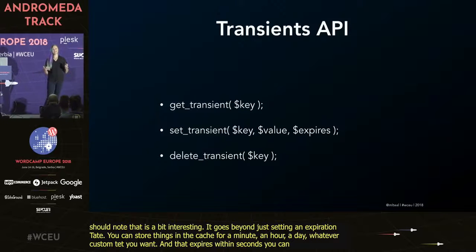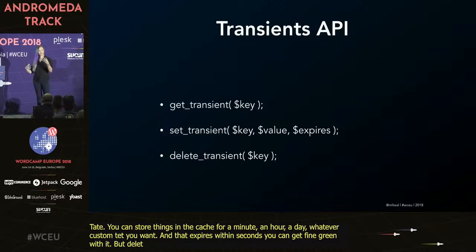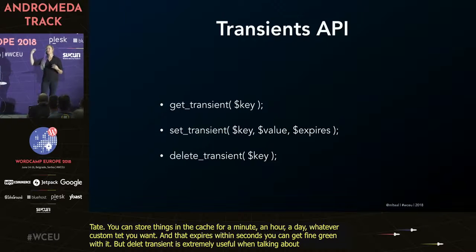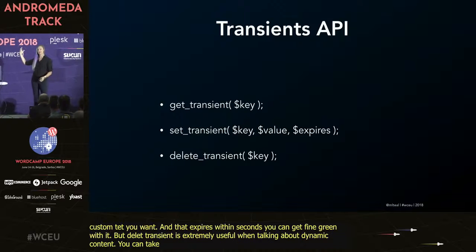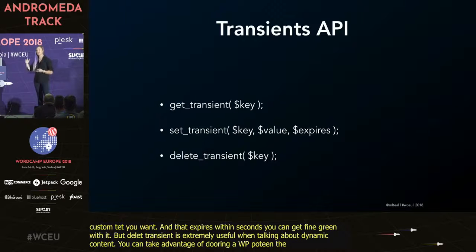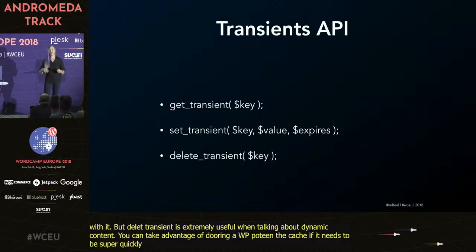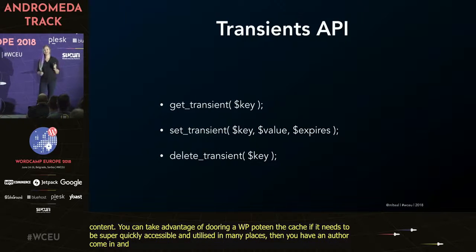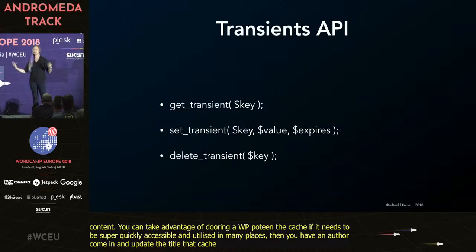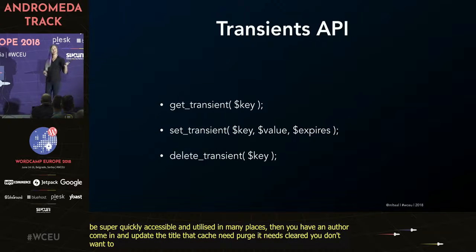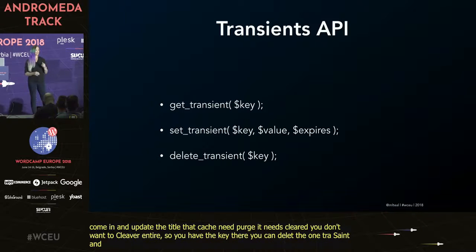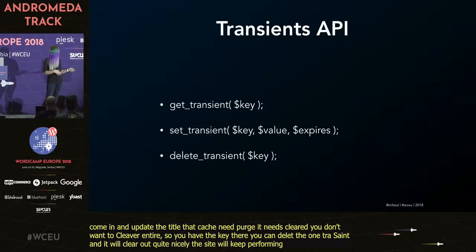Delete_transient is interesting because it goes beyond just setting an expiration date. You can store things in the cache for a minute, an hour, a day, whatever custom date you want — that expires in seconds, so you can get quite fine-grained. Delete_transient is extremely useful for dynamic content: you can store a WP post in the cache if it needs to be super quickly accessible and utilized in many places. But if an author comes in and updates the title, that cache needs purged — just that one transient — without having to clear the entire site cache.